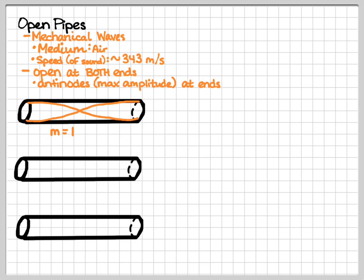The first harmonic is going to look like that. Antinodes at both ends and a single node in the middle. This is half of a wavelength contained within this pipe of length L.